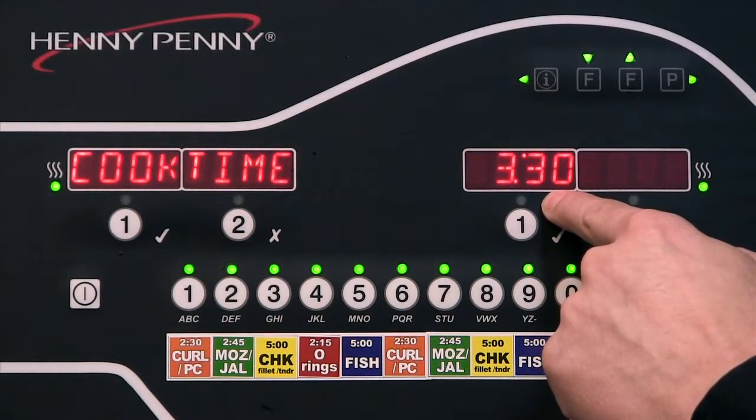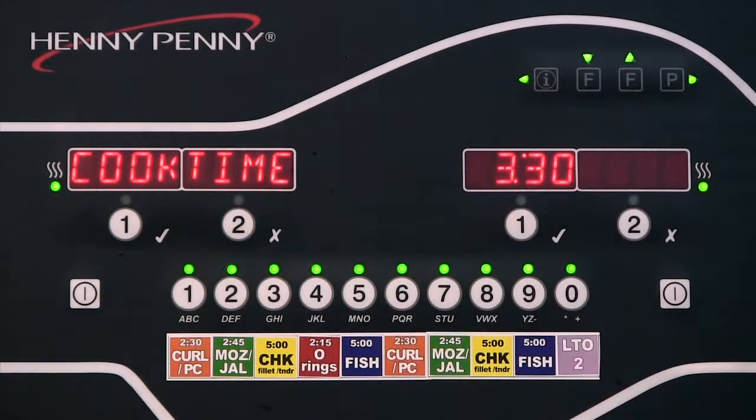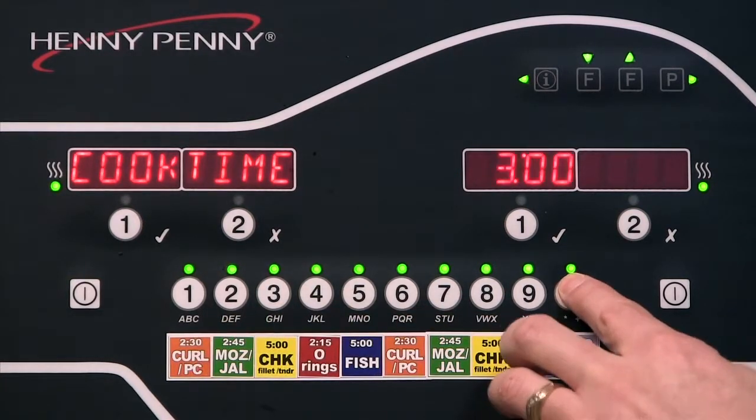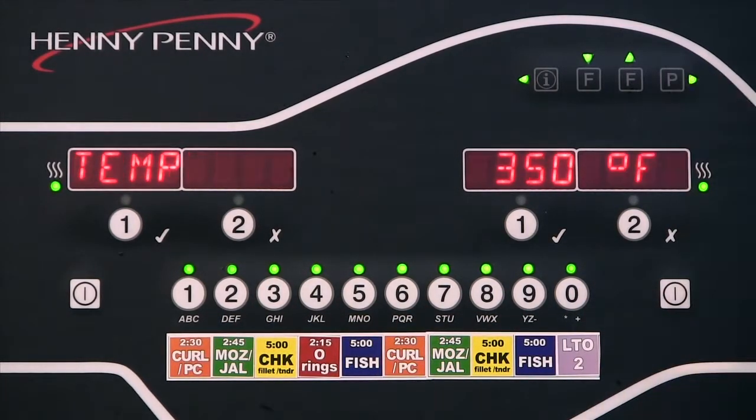Cook time is 3 minutes and 30 seconds here. If I wanted to change that, let's say our cook time, we wanted it to be 3 minutes, I would just simply press 300, press my program button.